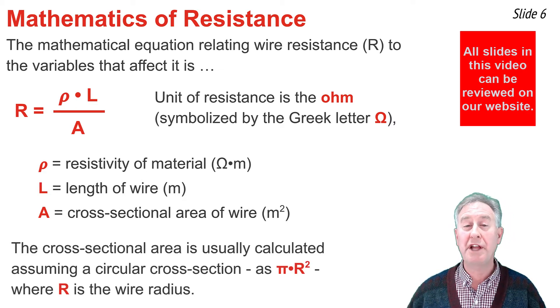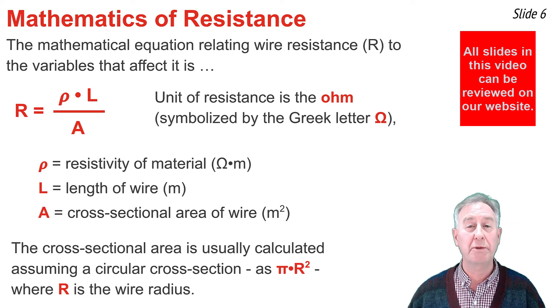If the value is not given, then the cross-sectional area of the wire can be calculated assuming a circular cross-section. We use π times r squared, where r is the radius, to calculate this cross-sectional area.